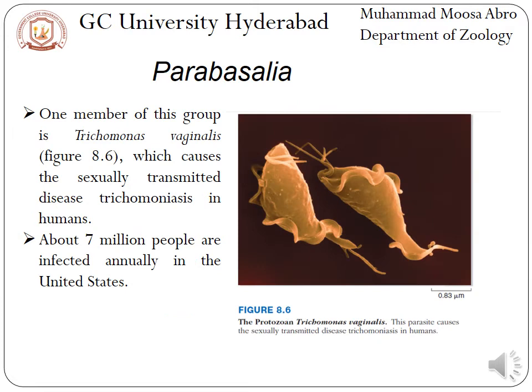An example of Parabasalia is Trichomonas vaginalis, which causes a sexually transmitted disease called trichomoniasis in humans. According to United States statistics, more than 7 million people are infected every year.